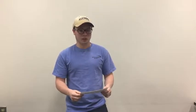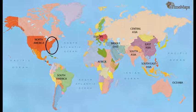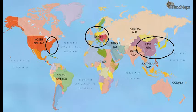Temperate deciduous forests are found in three main separated areas: the eastern United States, Eastern Asia — this includes parts of China, Korea, and Japan — and Western and Central Europe.